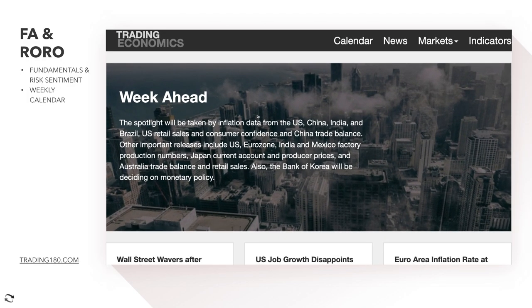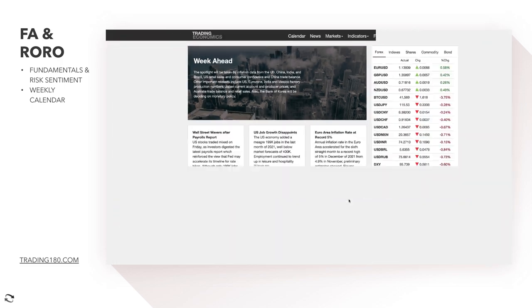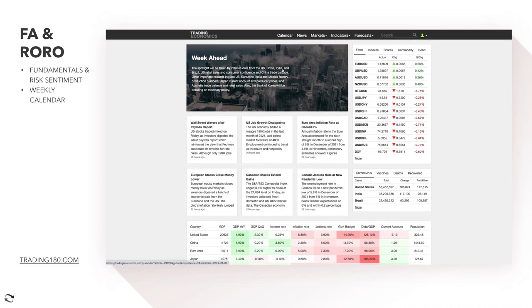This week, the spotlight will be taken by inflation data from the US and China, US retail sales and consumer confidence, and China trade balance. Other important releases include US and Eurozone factory production numbers, Japan current account and producer prices, and Australia trade balance and retail sales. There's a few things going on this week, and we'll also cover what happened on Friday with the jobs report.